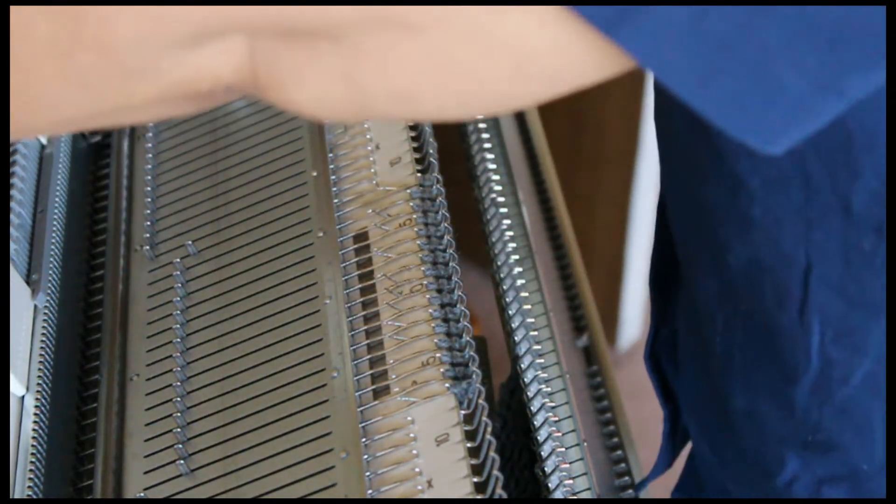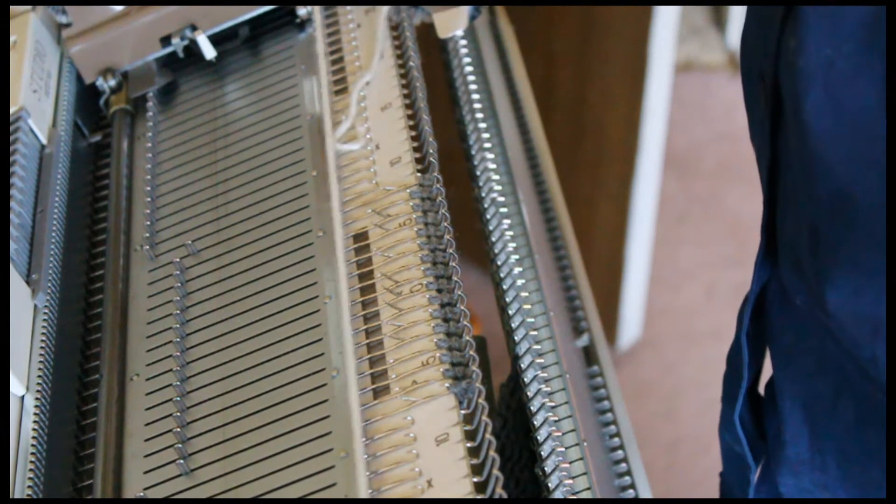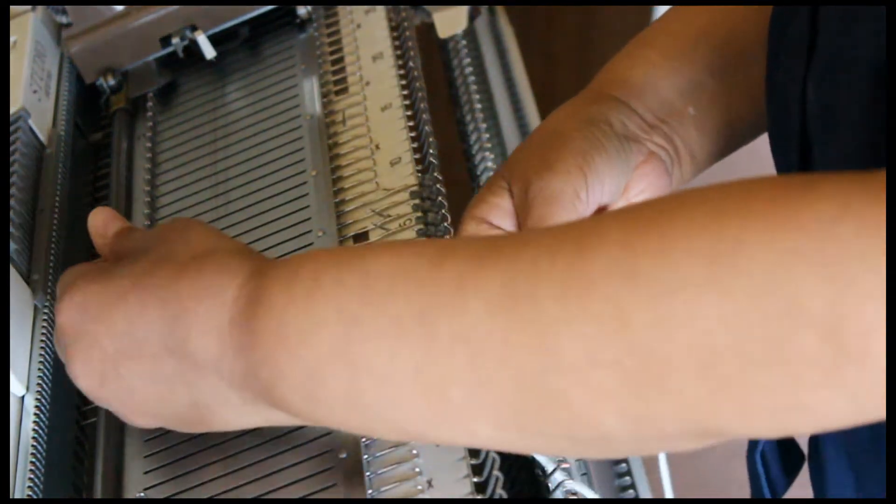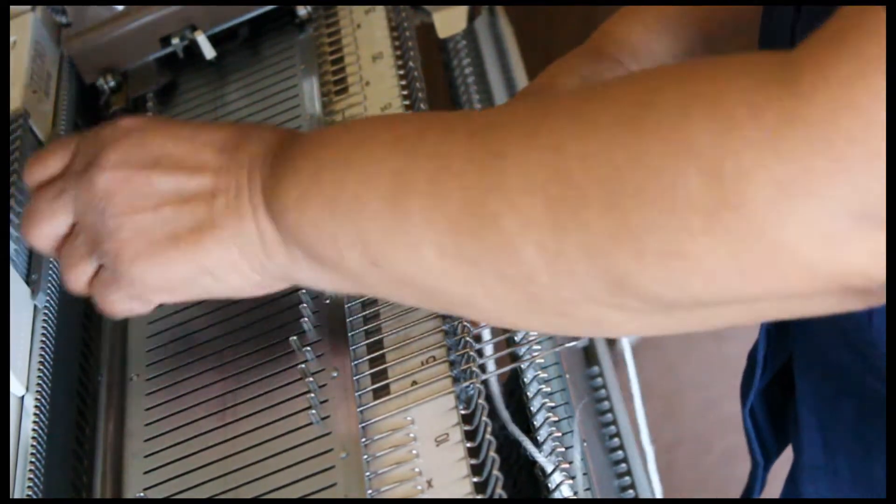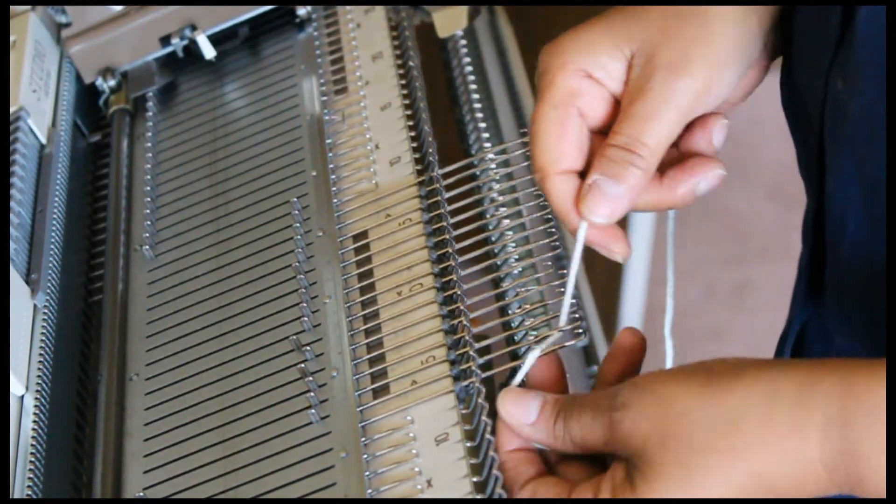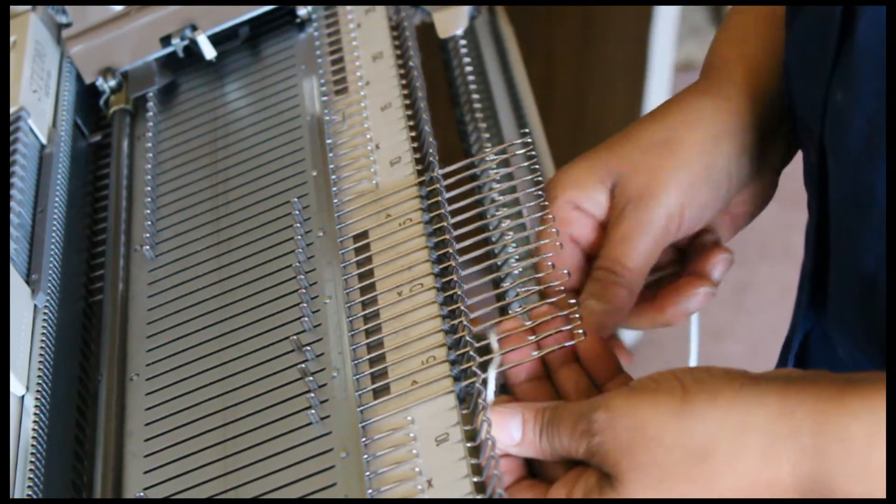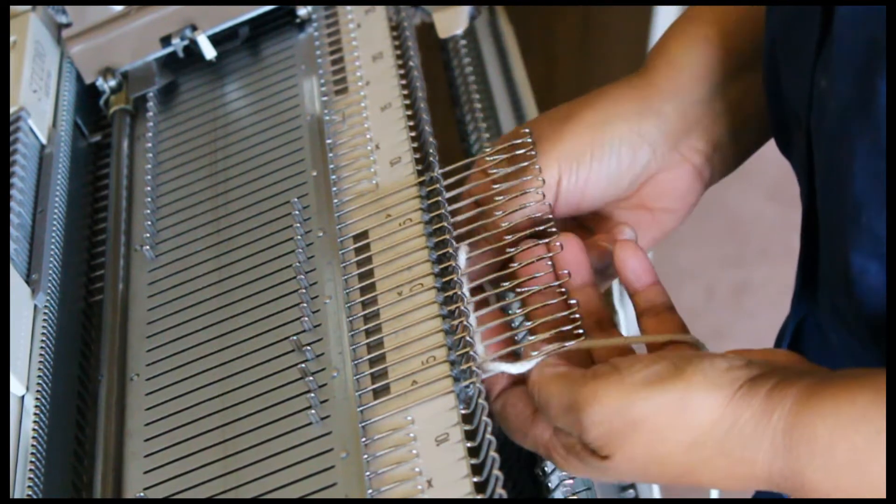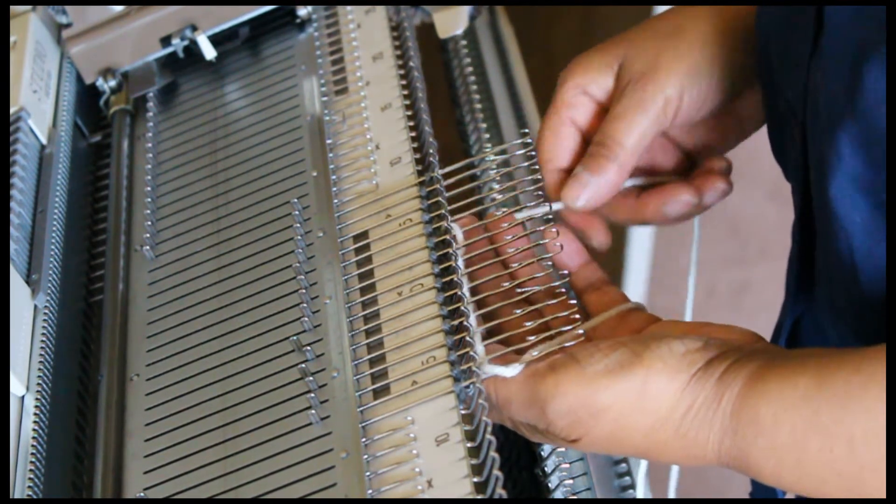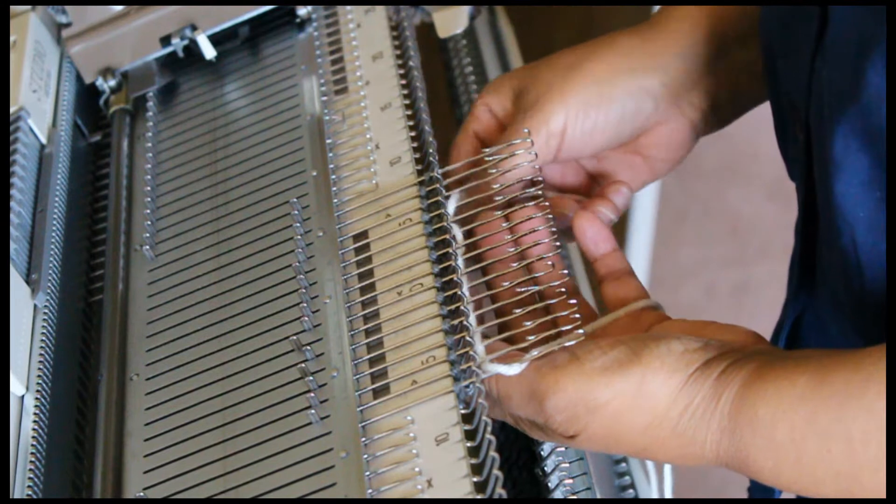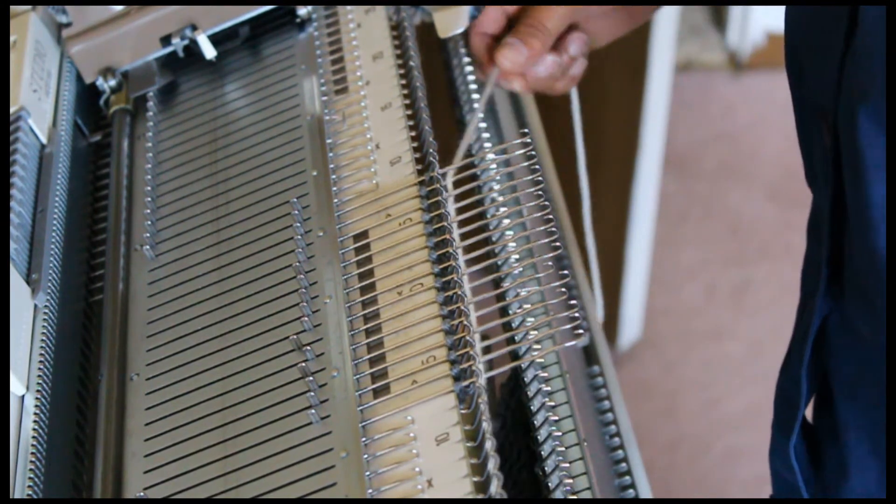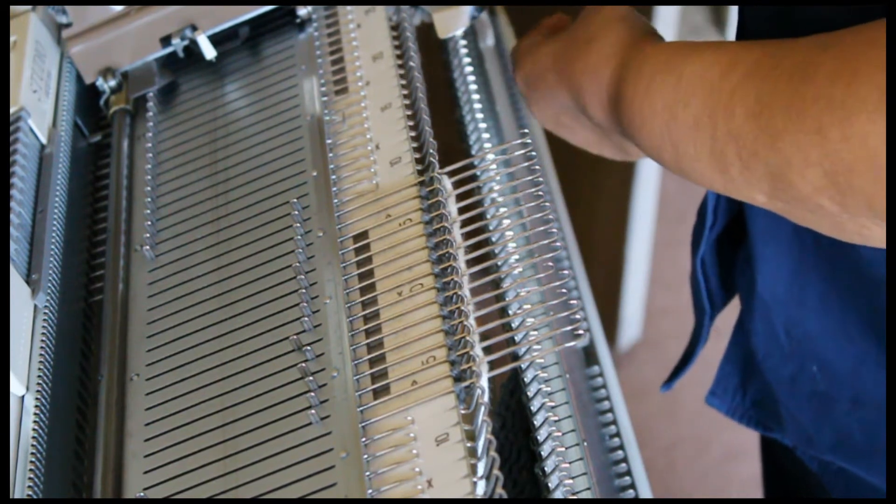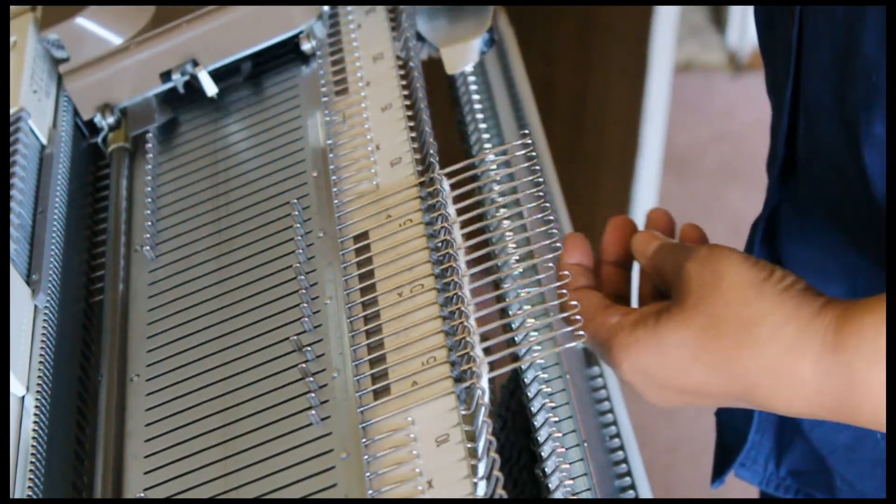Now, we need to work on the front cuff. So, we're going to use a light contrasting yarn, push all the needles out to the D position. Weave the contrasting yarn in between the needles. Why are we using this? Because we're going to pick up the stitches where the contrasting yarn is and place on the needles, thus creating a fold.